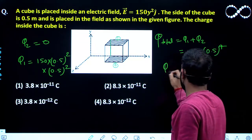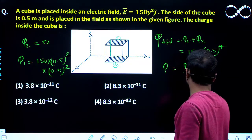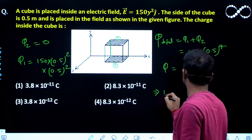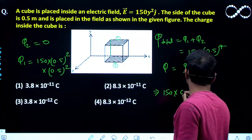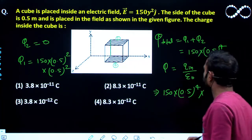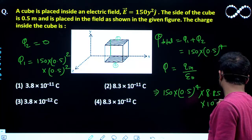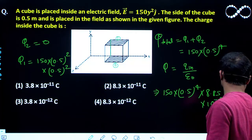So flux is equal if I use the Gauss law here. So flux is equal to Q interior upon epsilon naught. So I will say here the flux is given 150 into 0.5 raised to power 4 into epsilon naught. So epsilon naught value is 8.85 into 10 raised to power minus 12 and that is the Q interior.